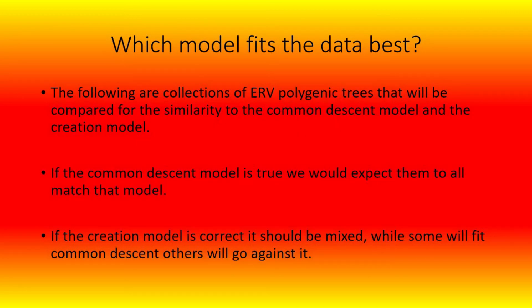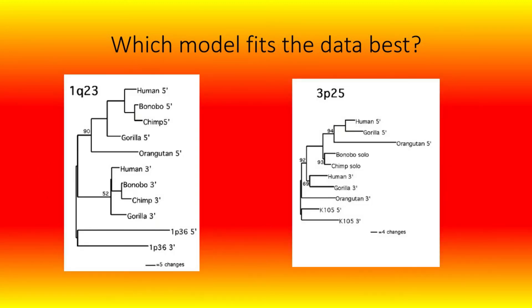So which model fits the data the best? The following are collections of ERV phylogenetic trees compared for similarity to the common descent model and the creation model. In the first one labeled 1Q23, the top one is a nice match for the common descent model. However, the second one does not match — there is no evidence of this branch existing in orangutans, and the human and gorilla are almost directly across from each other. In fact, the way this one is drawn suggests it suffers at least a little bit from a bias in favor of common descent, and a look at the raw data may actually show it to be less in agreement with common descent than it appears.